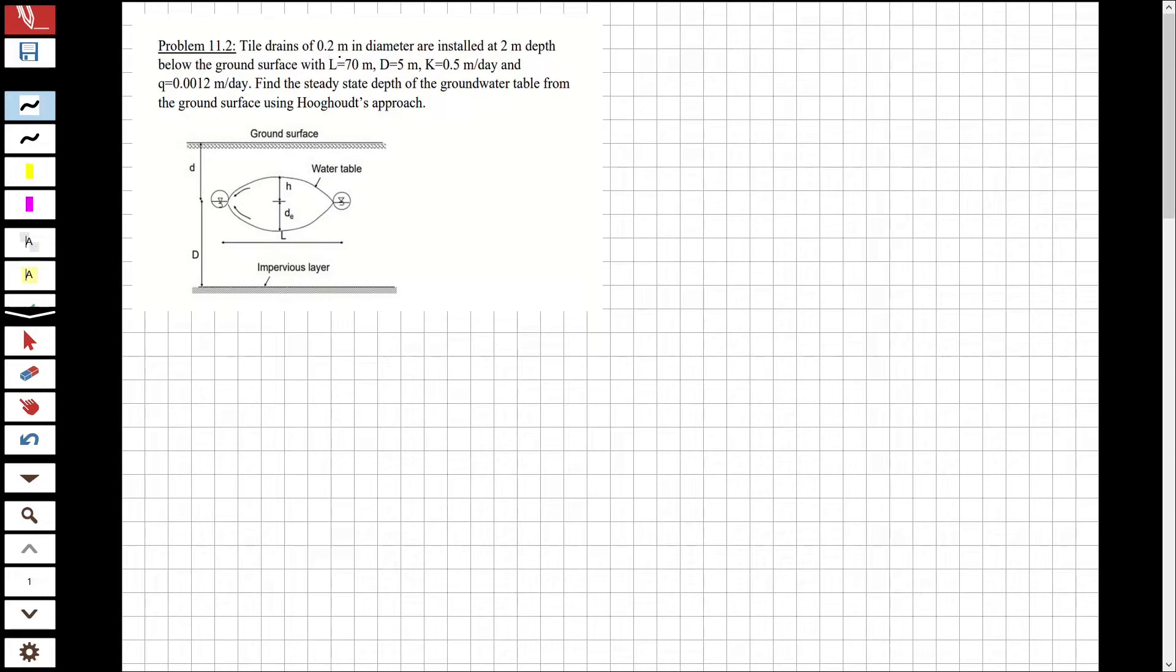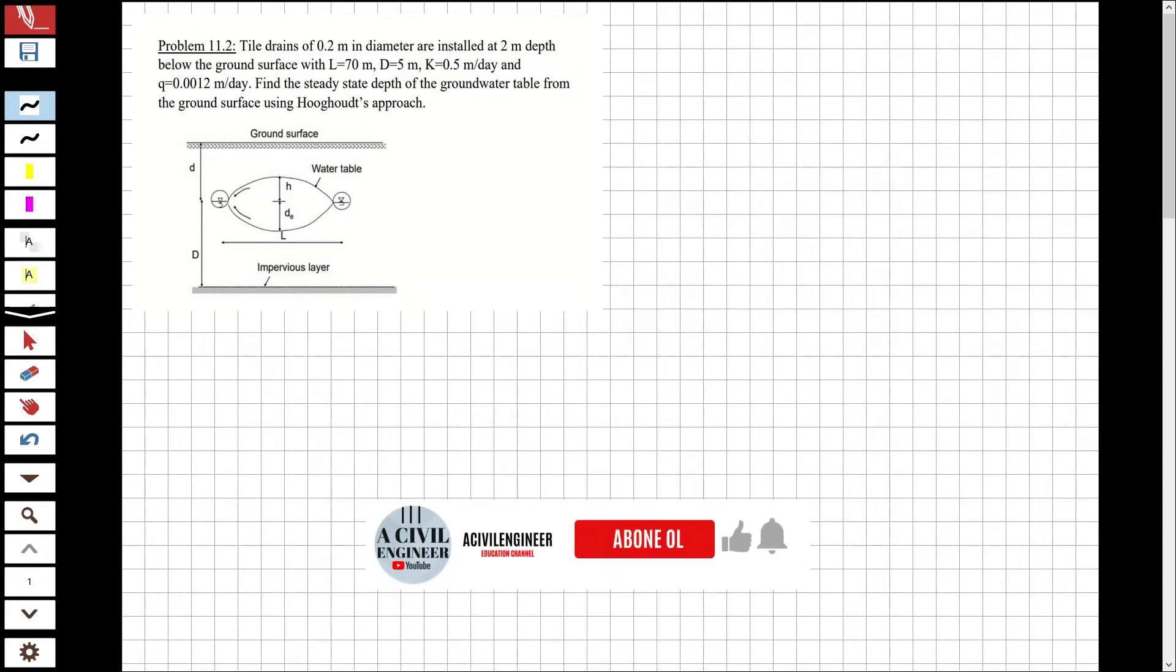Let's read it first. Tile drains of 0.2 meter in diameter are installed at a two meter depth below the ground surface. The distance from the drains to the impervious layer is 5 meters, k is 0.5 meter per day and q is 0.012 meter per day. Find the steady state depth of the ground water table from the ground surface using Hogar's approach.